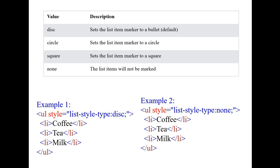These are the attribute values of the unordered list. If the value is disk, it sets the list item marker to a bullet. If the value is circle, it sets the marker to a circle. Square sets the marker to a square. None means list items will not be marked. Two examples are shown: in example one, type is disk, using the inline style attribute — style equal to list-style-type colon disk — so coffee, tea, and milk are marked with a disk. In example two, none is used, so list items are displayed without markers.